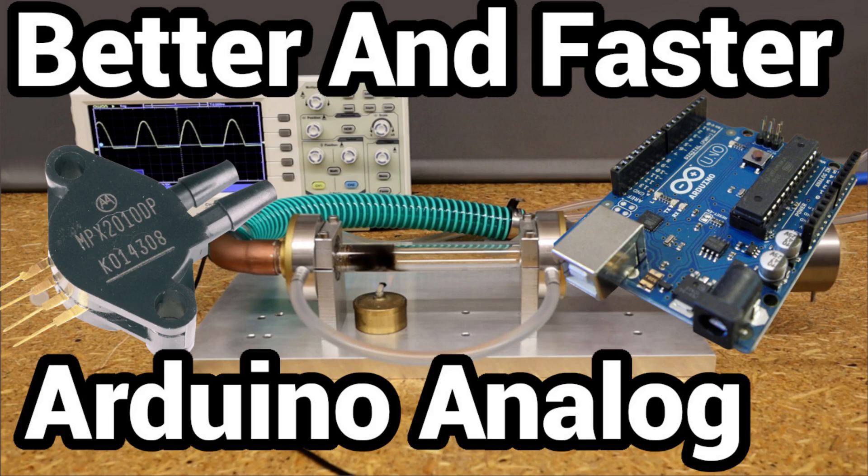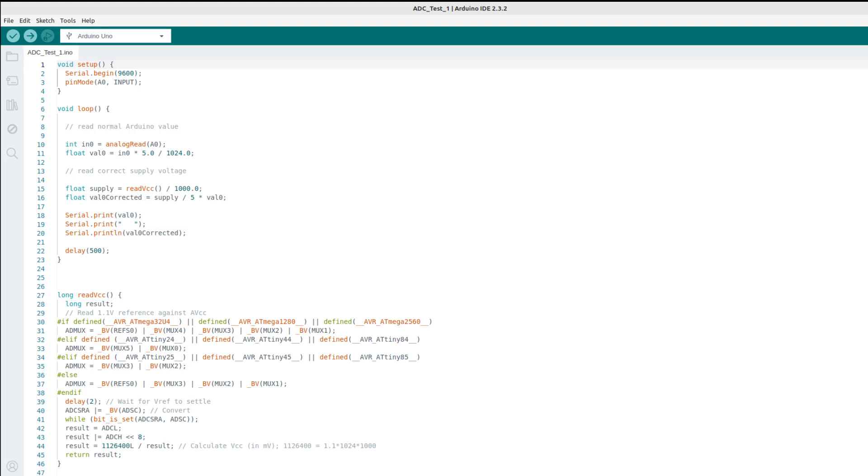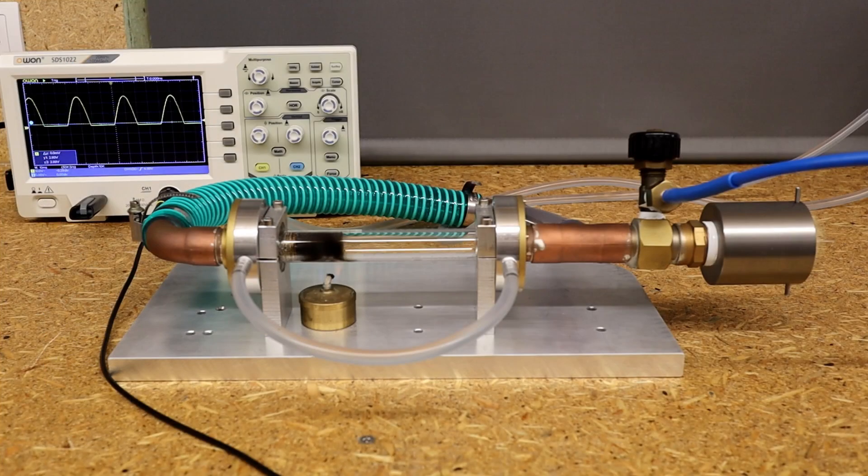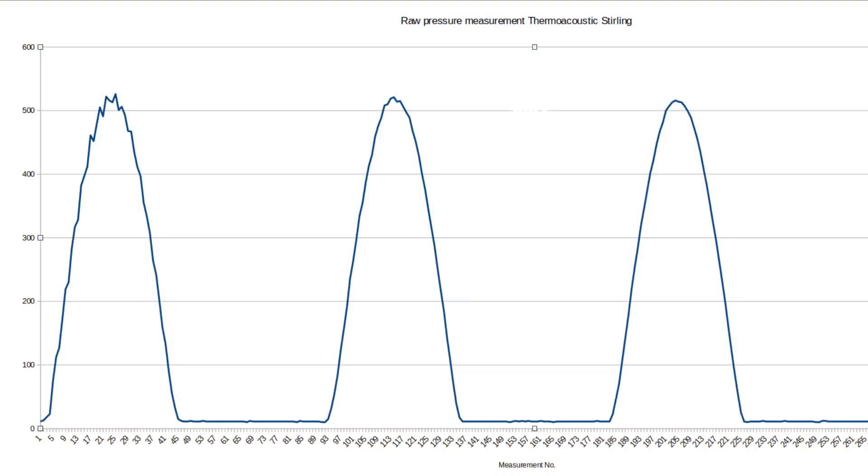In an earlier video, I showed you how to prepare the Arduino microcontroller for the most reliable measurements. This includes calibrating the microcontroller and enabling the fastest and most accurate measurements possible with different settings.